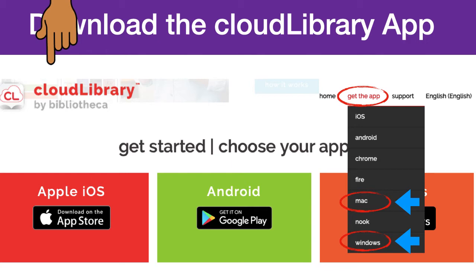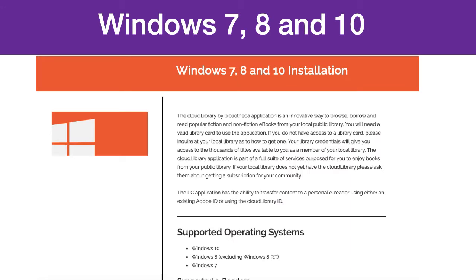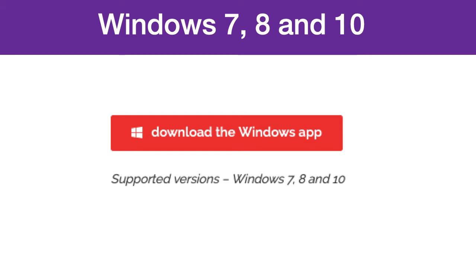Click on the option that best fits your available computer. If you choose the Windows option, you will be taken to this page. Read through the system requirements to ensure that your computer is compatible. Once you are ready to download the app, click the button at the bottom of the page. The installation of the app will begin. Walk through any necessary steps as guided by the installation software.